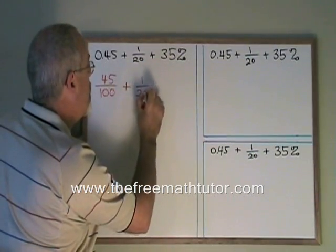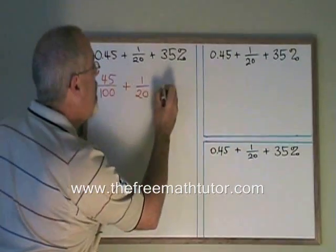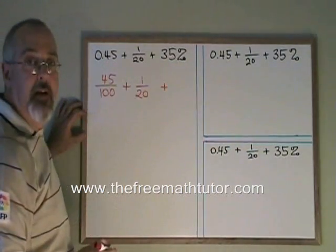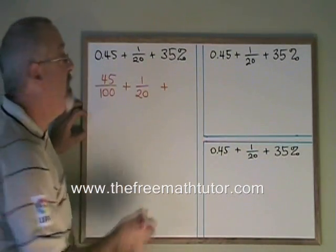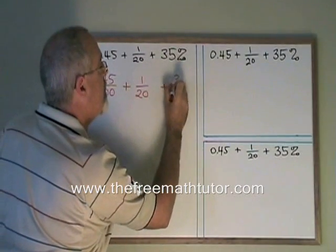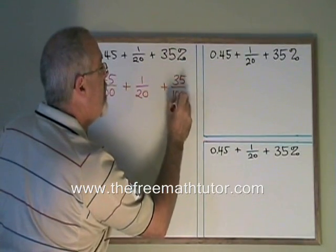We'll leave 1/20 the way it is for now. 35%, well, percent means over a hundredth. So 35% is very easy to convert to a fraction. It means 35 over a hundredth.